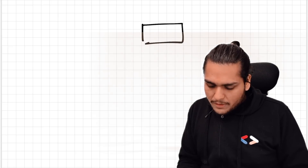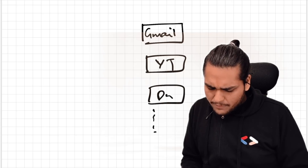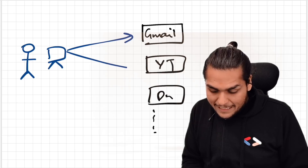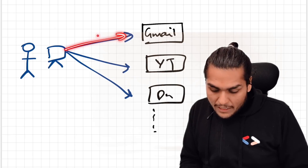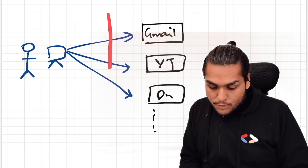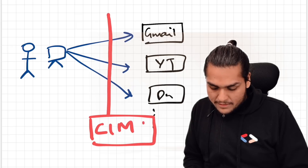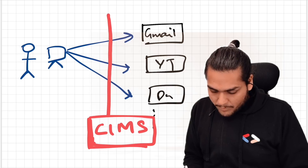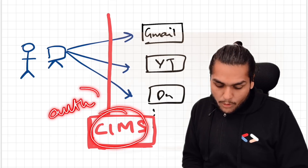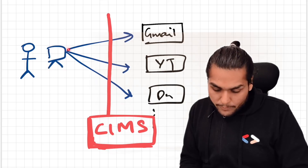Google has a lot of services — Gmail, YouTube, Google Drive, and many others. Whenever a user tries to access these services via their computer, they cannot directly access them. You can't directly access Gmail, YouTube, or Google Drive. Before you access any of these services, you have to cross this boundary — this is known as CIMS, the Central Identity Management System. It acts as a gatekeeper and manages the authentication of the user — it basically checks whether you are logged in or not.